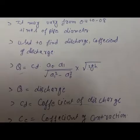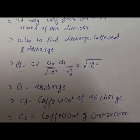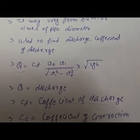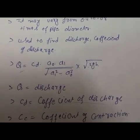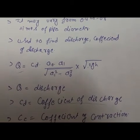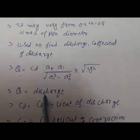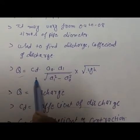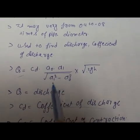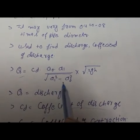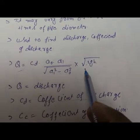The orifice meter is generally used to measure the discharge. We can calculate the coefficient of discharge using this formula: Q is equal to Cd into A0 A1, divided by root under (A1 squared minus A0 squared), into root of 2gh.